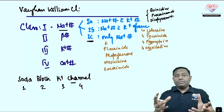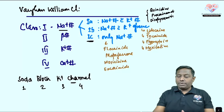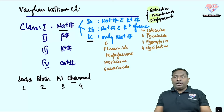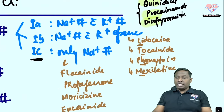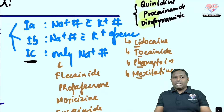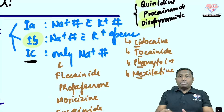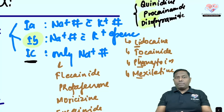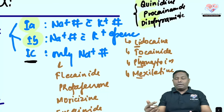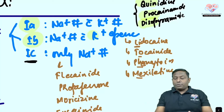Class 1A drugs — quinidine, procainamide, and disopyramide — are the 'A-great' drugs. Class 1B drugs like lidocaine are the 'brave' group because they are used in ventricular arrhythmias, where the potassium channel opens and potassium flows outward.